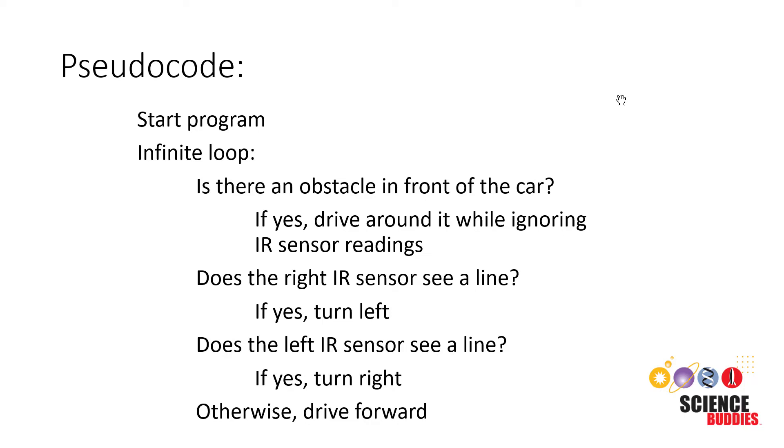Another way to represent your algorithm is a flowchart. This is a graphical way to represent the flow of your program using symbols. So for example, using the same program that we just wrote pseudocode for, first we would start the program. We represent the start with an oval.